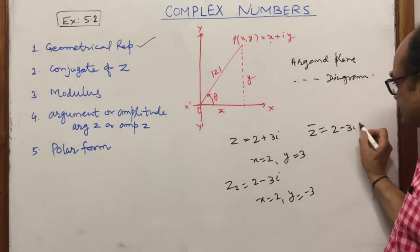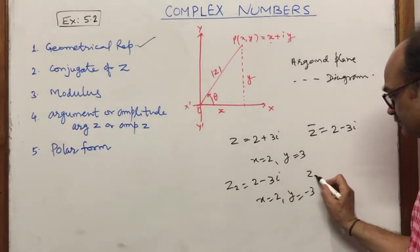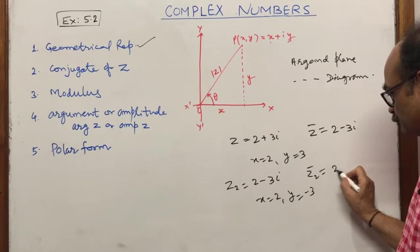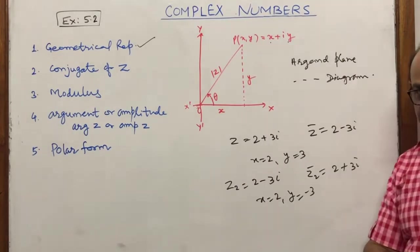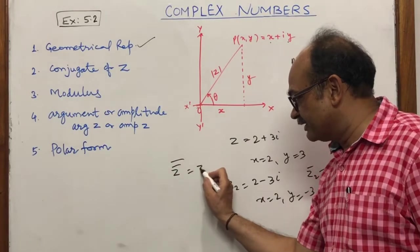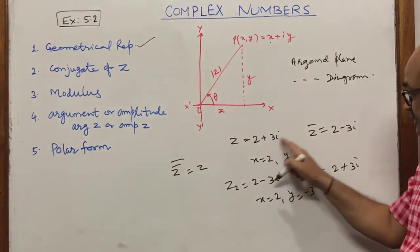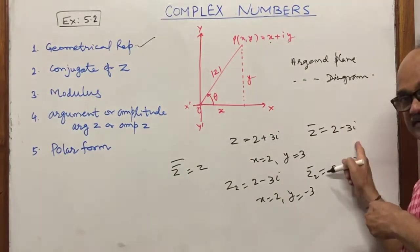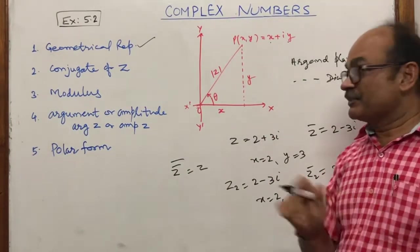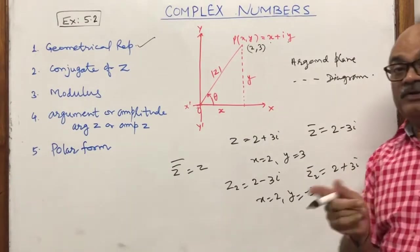For example, z-bar is 2 minus 3 iota, and z2-bar equals 2 plus 3 iota. Note that the conjugate of z-bar is simply z again, because changing the sign twice returns to the original.